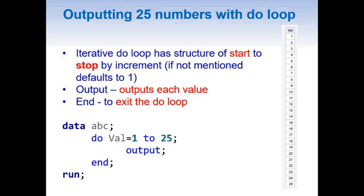We finally have an END which helps to exit the DO loop. One important thing: here I have DO val equal to 1 to 25. In general, a DO loop has a structure of start to stop by increment. Here we only have start to stop but no increment — whenever we don't mention an increment, it means we are incrementing by one.